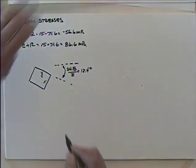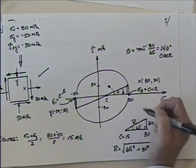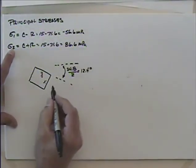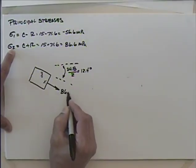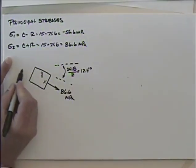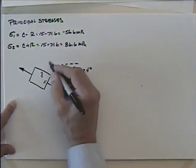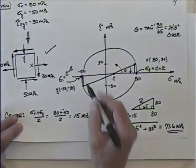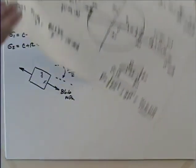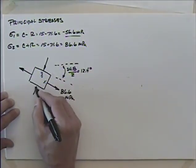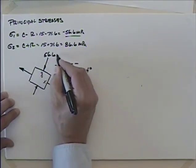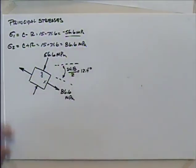In the x-direction, we've rotated so x becomes sigma 2, which is the center plus the radius: 86.6 megapascals. We'd have a corresponding one on the other side. Then y goes to sigma 1, which is minus 56.6. I'll draw it in compression so I can get rid of the negative sign: 56.6 megapascals. Those are the principal stresses — maximum and minimum — on a properly oriented element.